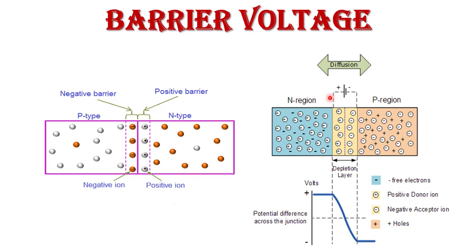This is called the barrier potential because it acts as a barrier to oppose the flow of electrons and holes across the junction. The barrier potential represents the height of the barrier that must be overcome for the flow of electrons and holes. Barrier potential is measured in volts. The barrier potential of silicon is about 0.6 V, whereas for germanium it is 0.2 to 0.3 V at 25°C.